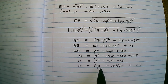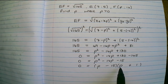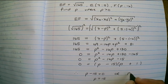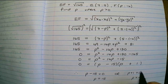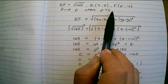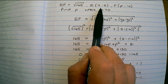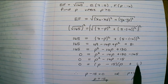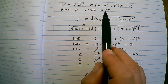Factorizing gives (P minus 15)(P plus 1) equals zero. Therefore P minus 15 equals zero, so P can be 15; or P plus 1 equals zero, so P can be negative 1. We have two possible values, but the question states P must be greater than zero. Looking at our answers, P equals 15 is positive and acceptable, while P equals negative 1 does not satisfy the original constraint, so P cannot be negative 1.